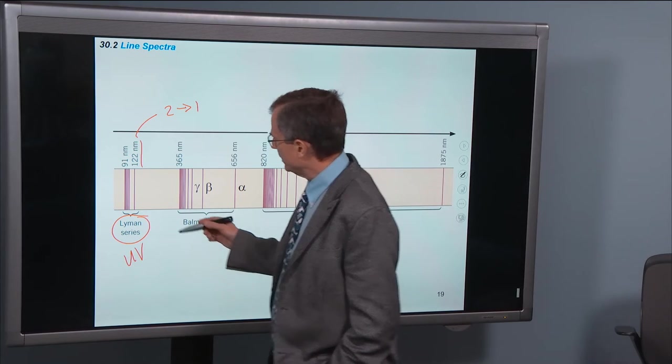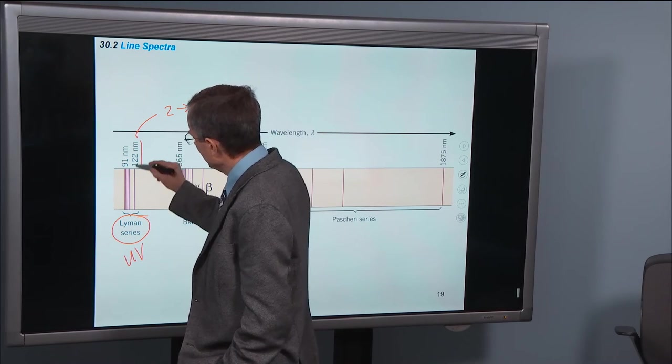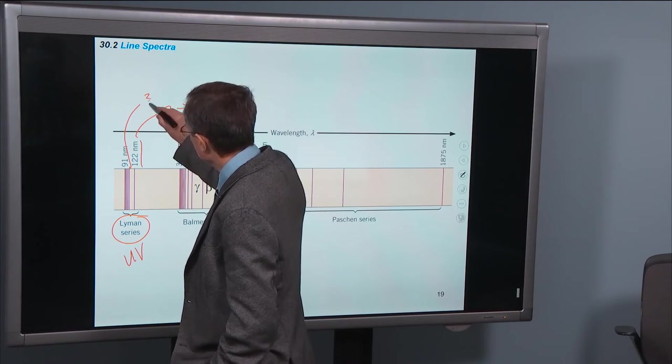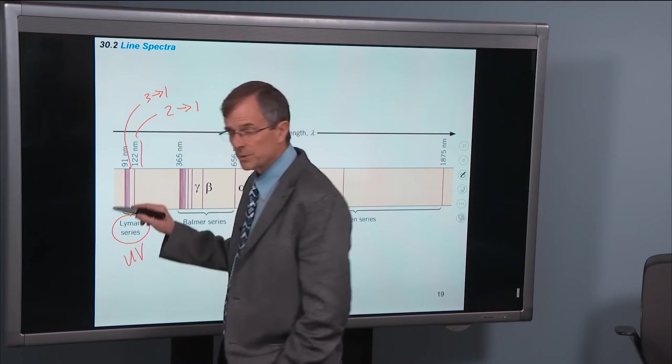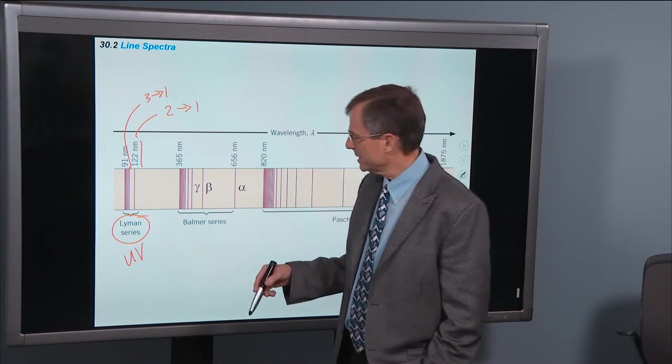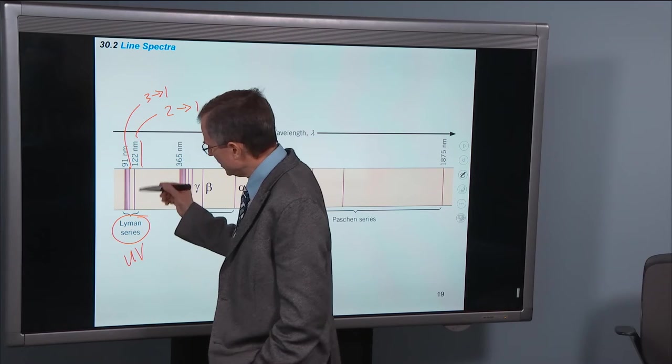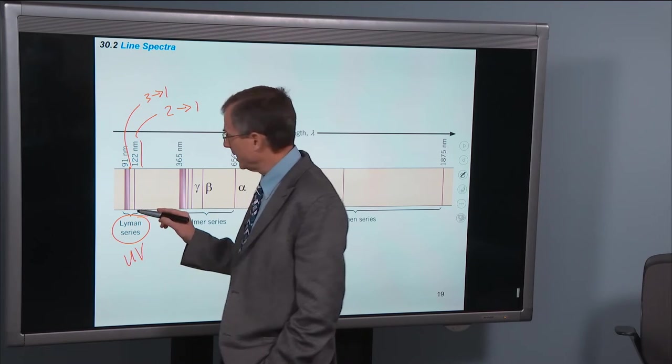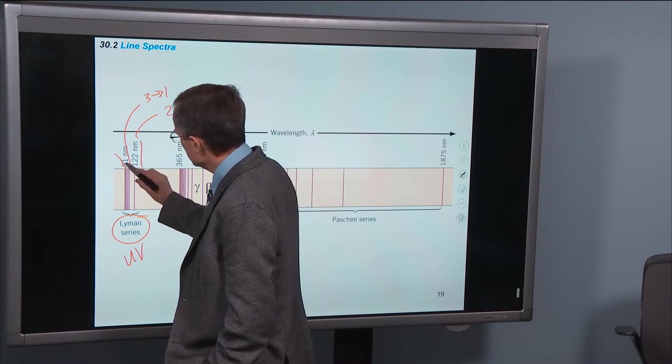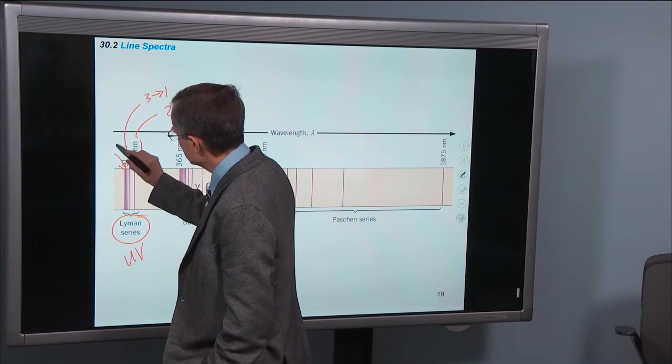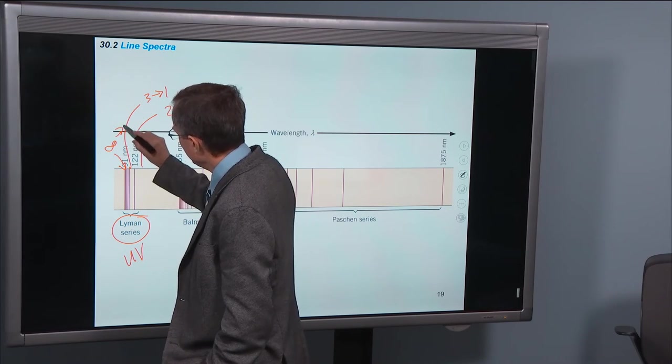And one thing you'll notice about it, this is 2 to 1. This line here is 3 to 1. This next one is 4 to 1, 5 to 1, 6 to 1, 7 to 1. And these lines are actually getting closer and closer together, so that at this point, roughly about here, this is infinity to 1.